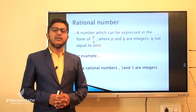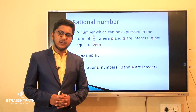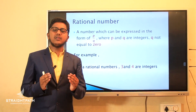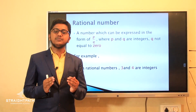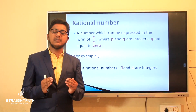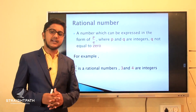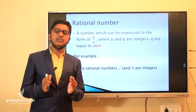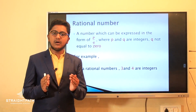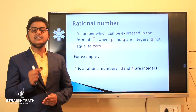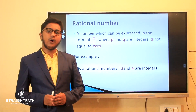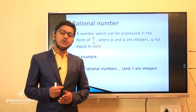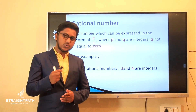Dear students of grade 8, today we discuss rational numbers, which is the first chapter of mathematics. A rational number is a number which can be expressed in p by q form, where p and q are integers and q is not equal to 0.